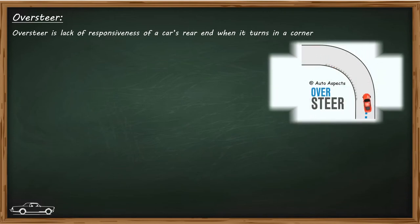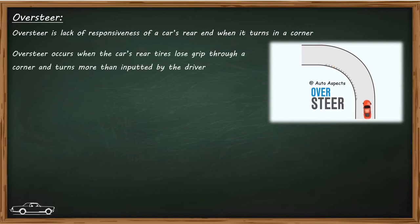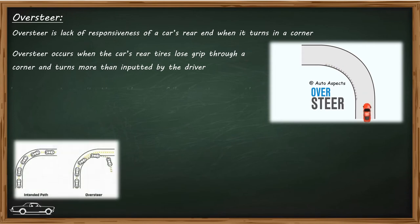Oversteer occurs as the rear tire loses grip through a corner, making the vehicle turn more than the driver's input. In these conditions, the car fails to stay on the correct cornering line, as the rear end rotates around.